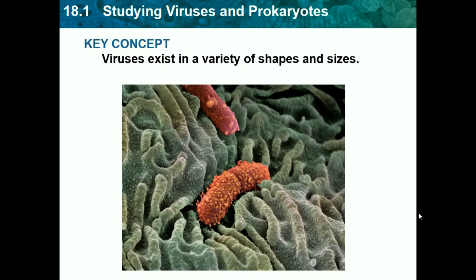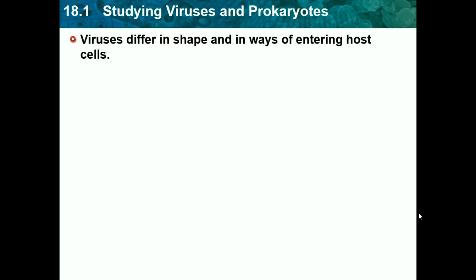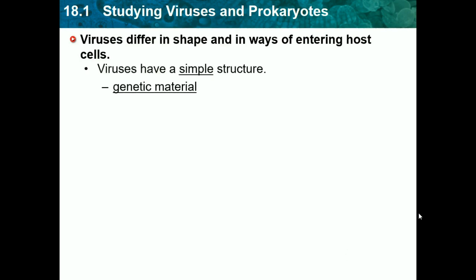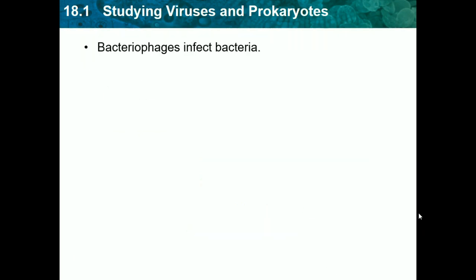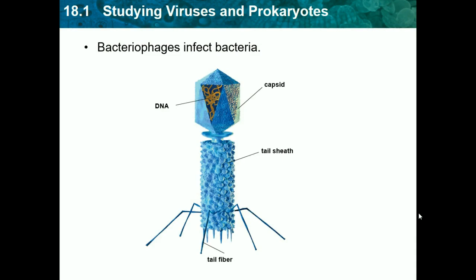This is 18.2, which is viral structure and reproduction. Viruses exist in various shapes and sizes and differ in shape and in ways of entering host cells. Viruses have a simple structure: they have genetic material and a protein shell called a capsid. There may also be a lipid envelope as an outer protective layer. Bacteriophages infect bacteria — here we can see the virus has DNA in the head and the outer layer is the protein sheet, the capsid.